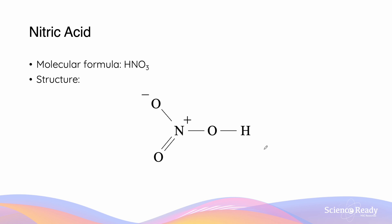Here is the structure of nitric acid, which has the molecular formula HNO3. If we look at the structure here, we can notice that there is only one hydrogen on the outside of the structure which is able to be donated as an acid. This means that this is what we call a monoprotic acid, because there is only one hydrogen which it is able to donate.